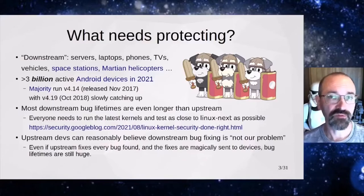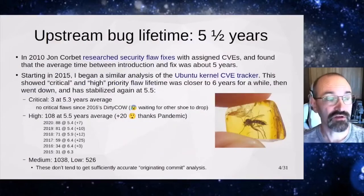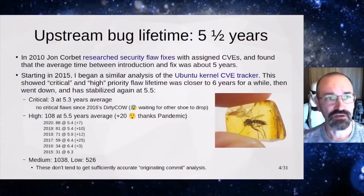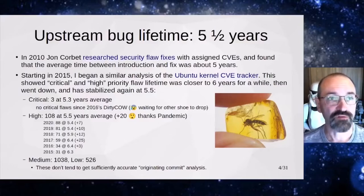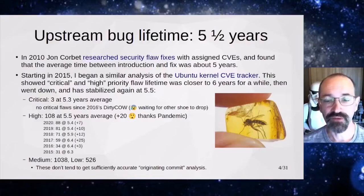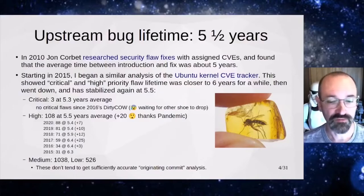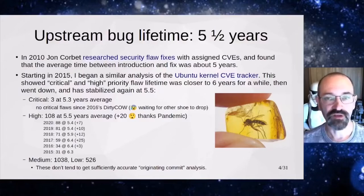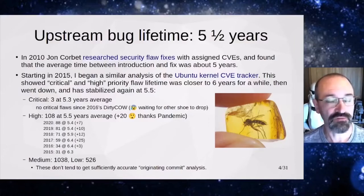It's a reasonable position for an upstream Linux kernel developer to say that downstream bug fixing is not their problem. Even the bug lifetimes in the upstream kernel are quite long. John Corbett did research into this in 2010 and found that the average time between the introduction of a flaw and it getting fixed was about five years. I started in 2015 tracking this more closely. Looking at critical and high vulnerabilities, they started to creep up towards six years, but more recently it's stabilized at about five and a half years.